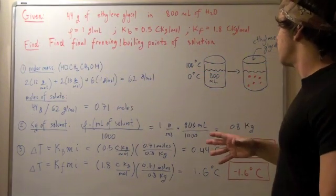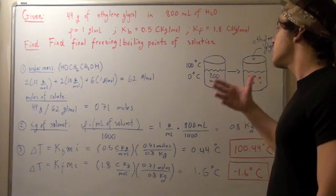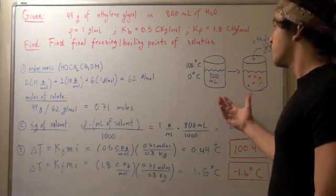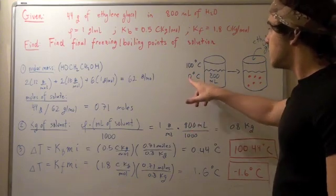So in our initial condition, we have 800 milliliters of our solvent, our water, and the boiling point of water is 100 Celsius and 0 Celsius.